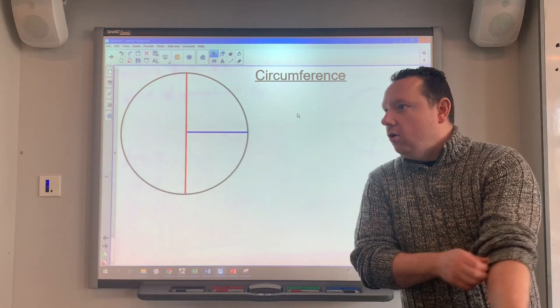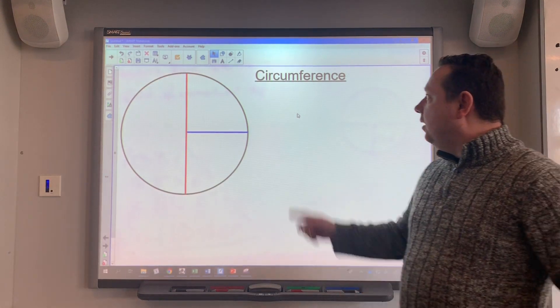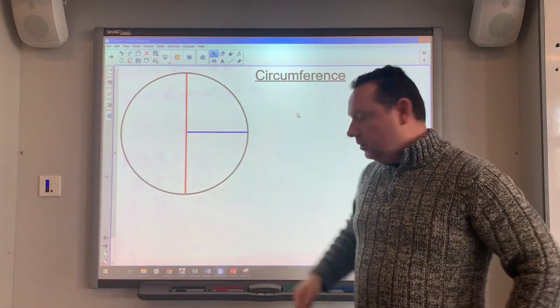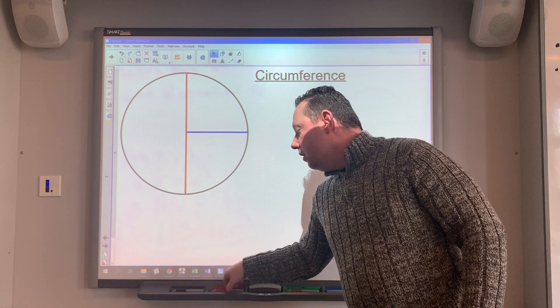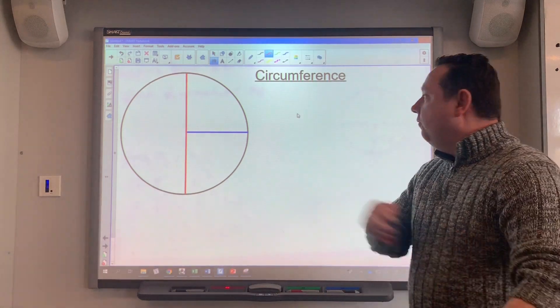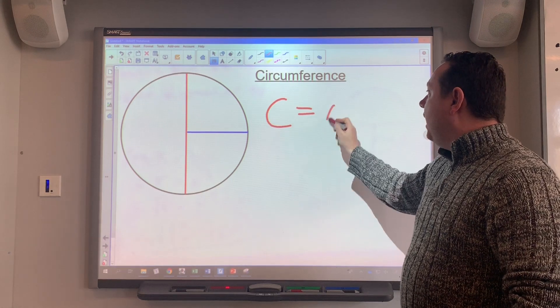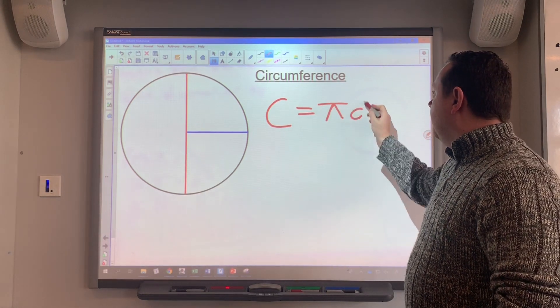Okay, a quick short video on circumference. So circumference of a circle is just the perimeter, the distance around the outside of a circle. To work out the circumference C, we use the formula C equals pi times diameter.